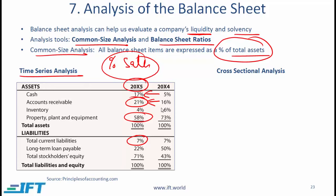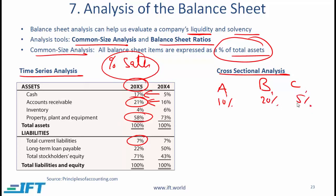The curriculum gives an example of cross-sectional analysis, where you look at these percentages or ratios for a given period across different companies. So if you have companies A, B, and C, you might see a cash percentage of 10%, 20%, and 5%, and for accounts receivable, you might see 20%, 17%, and 4%. This tells you how these companies are managing themselves.